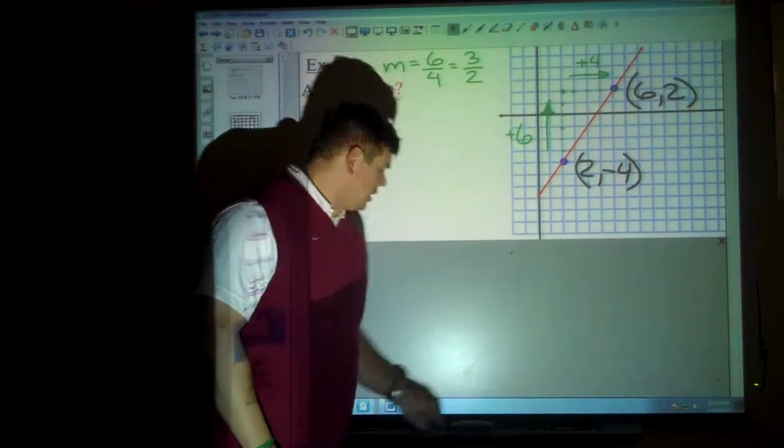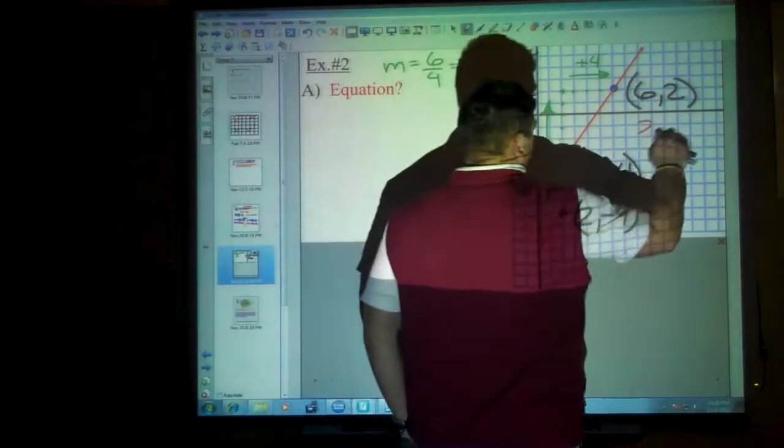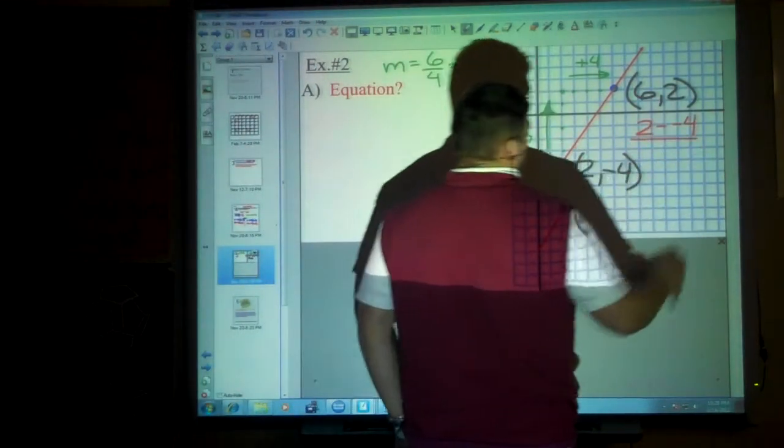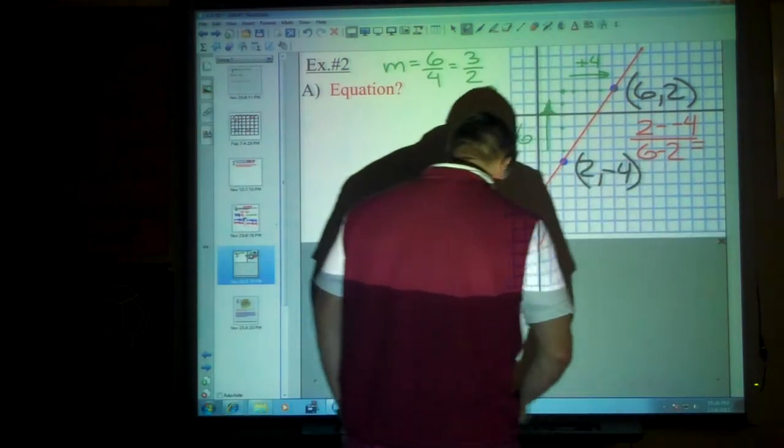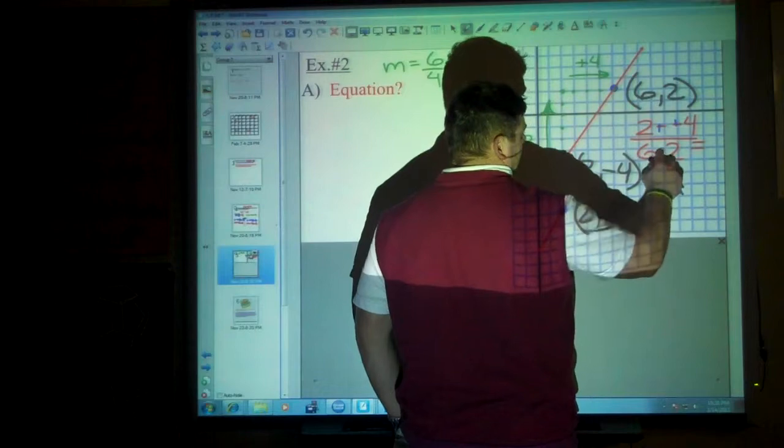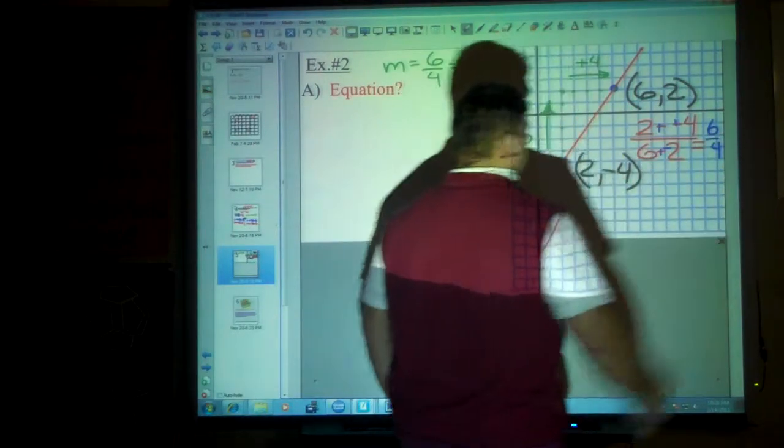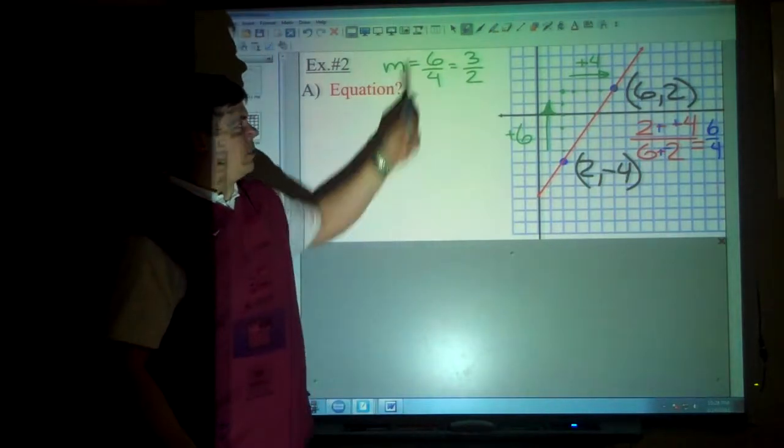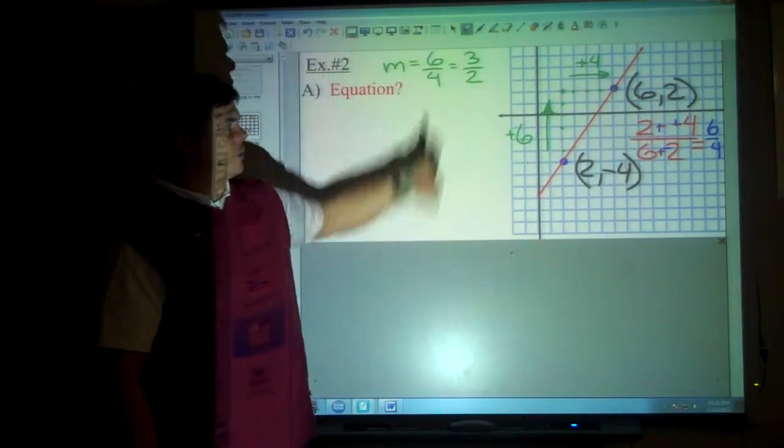If you don't believe that that works and you'd rather use the slope formula, you could certainly do that. You could go 2 minus negative 4 over 6 minus 2. And if you watch your signs, that becomes plus positive and that becomes plus negative. So you end up with 6 over 4, which is the exact same thing we had. So whether you use the slope formula or you count rise over run on the graph, we know the slope is 3 over 2.